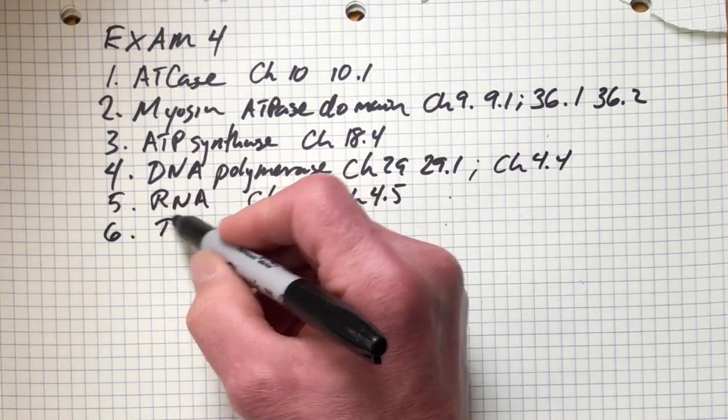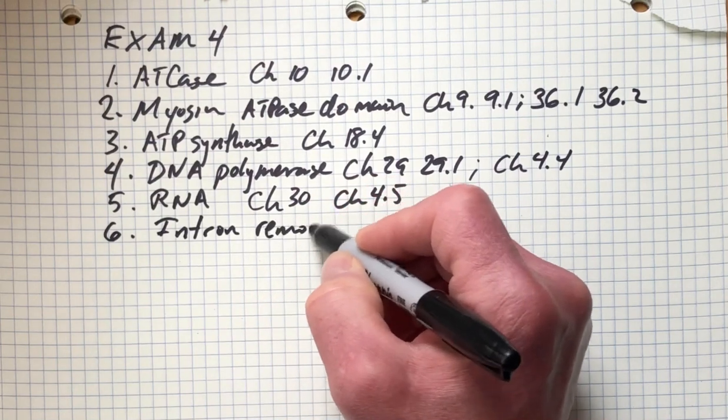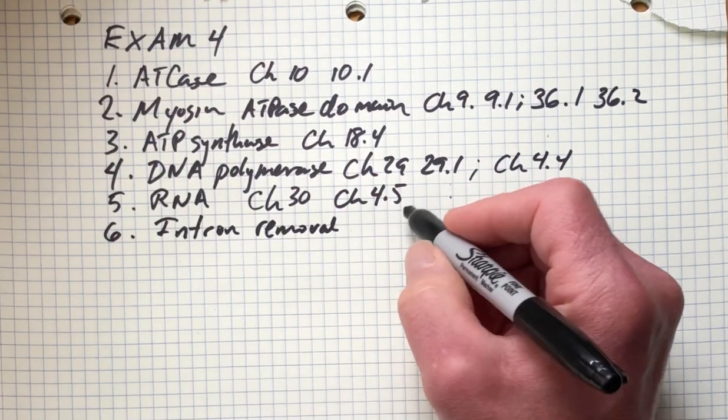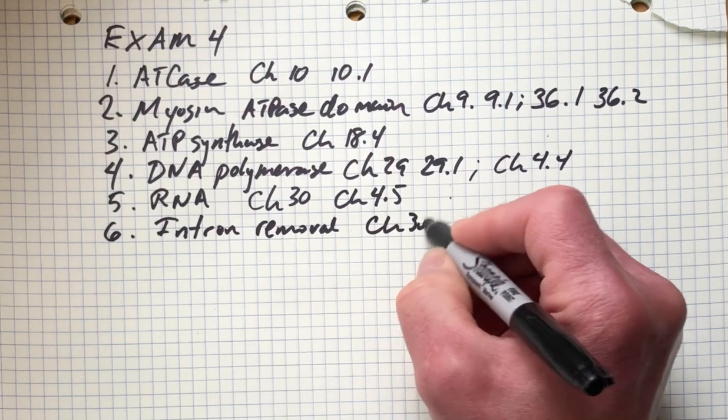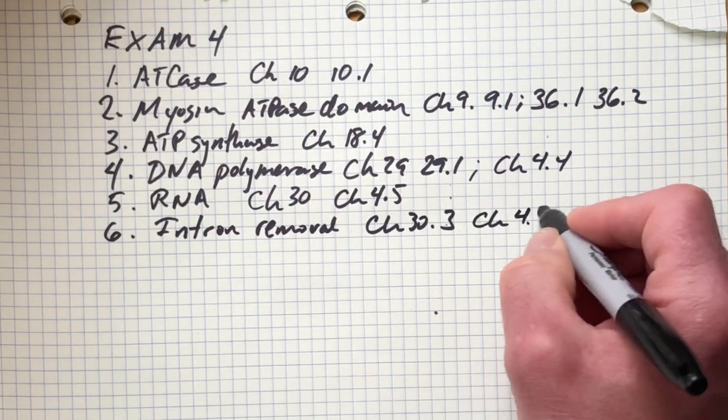Sixth subject is going to be intron removal, catalyzed by the spliceosome. This is covered in chapter 30.3, RNA processing. Also, chapter 4.7 gives a good overview.